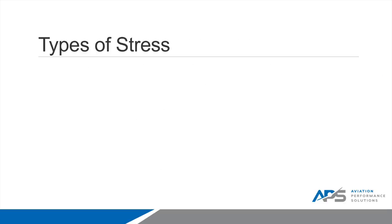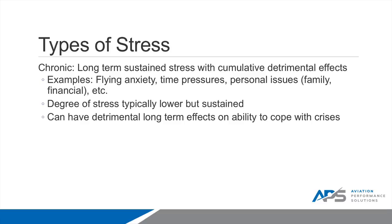What are the types of stress? First, there's chronic stress — long-term sustained stress with cumulative detrimental effects. Examples may be flying anxiety, time pressures, personal issues that are chronic or long-lasting, such as family or financial concerns. In chronic stress, the degree of stress is typically lower but sustained for longer periods of time, and it can have detrimental long-term effects on your ability to cope with crises.